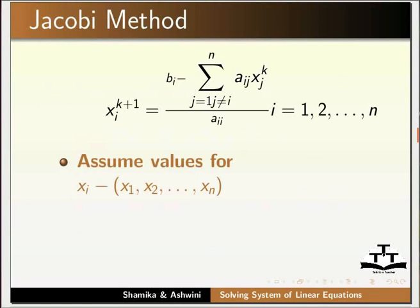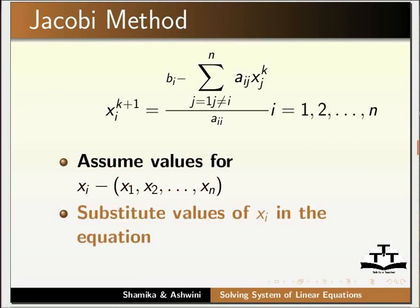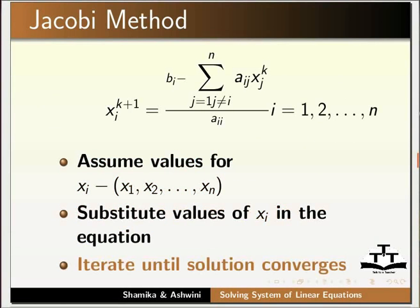The first iterative method we will be studying is Jacobi method. Given a system of linear equations with n equations and n unknowns, we rewrite the equations such that x(i, k+1) = (b_i - summation of a_ij * x_j^k from j=1 to n) / a_ii, where i is from 1 to n. We assume values for each x_i, then substitute the values in the equations from the previous step, and continue the iteration until the solution converges.